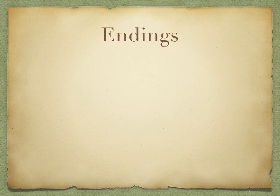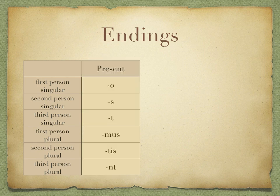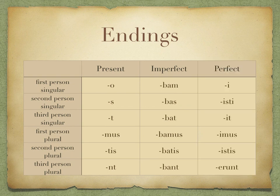Now the endings for these three different tenses. Here is the list of what all these endings refer to — remember, we go through singular and plural forms. In the present, the endings are: -o, -s, -t, -mus, -tis, -nt. Imperfect endings: -bam, -bas, -bat, -bamus, -batis, -bant. And the perfect: -i, -isti, -it, -imus, -istis, -erunt. So if we read along the rows: 'I am eating', 'I was eating', 'I ate'; second person singular: 'you eat/are eating', 'you were eating', 'you ate', and so on. Make sure that you know both the endings and how to translate them into English.